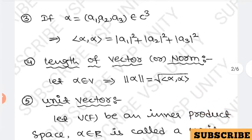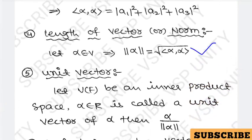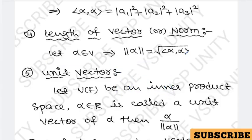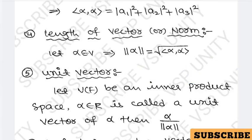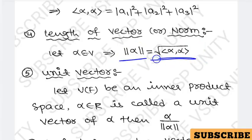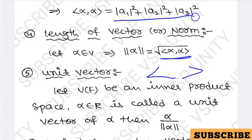Next concept: length of a vector or norm of a vector. This is very important for finding unit vectors and the angle between vectors. Let alpha belong to V; then norm of alpha, denoted by double bars, is equal to the square root of the inner product of alpha with itself: norm(alpha) = sqrt(⟨alpha, alpha⟩).